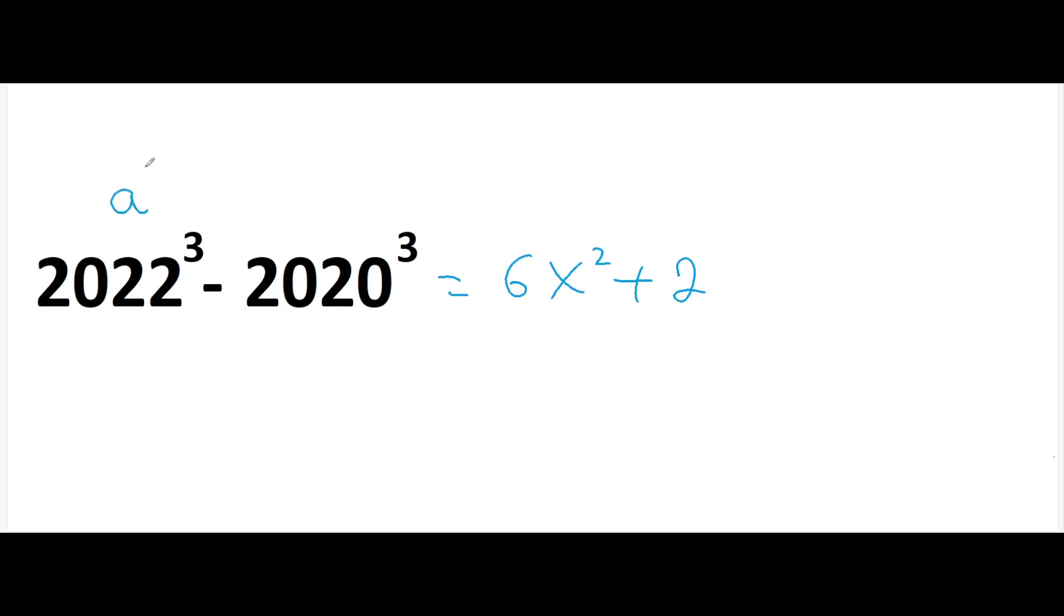We know that a cubed minus b cubed, the formula, a minus b times a squared plus ab plus b squared. Now we can increase it by this formula. So 2022 minus 2020 times 2022 squared plus 2022 times 2020 plus 2020 squared is equal to this expression. This is 6x squared plus 2.